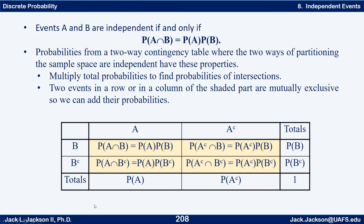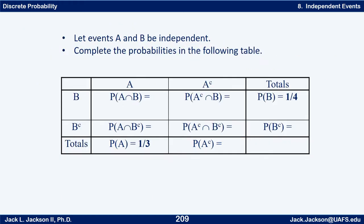That works out similarly for all four of those cells. You multiply the corresponding marginal probability at the bottom and at the right to get the corresponding probability of the intersection in the middle. And that happens if and only if the events are independent.